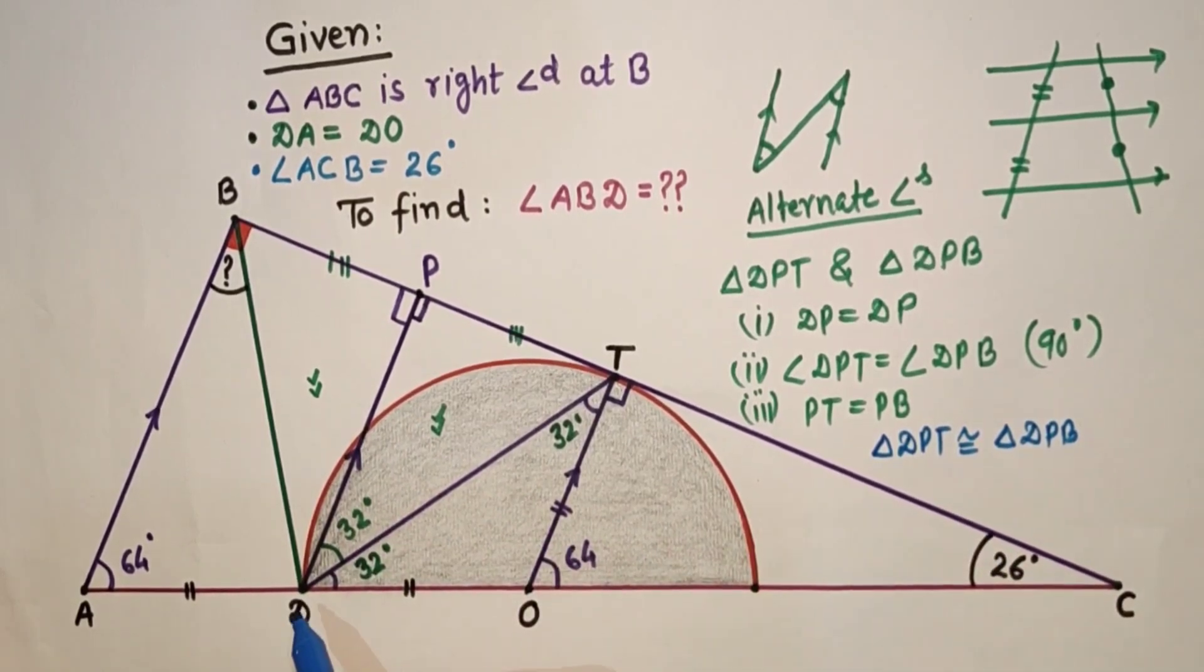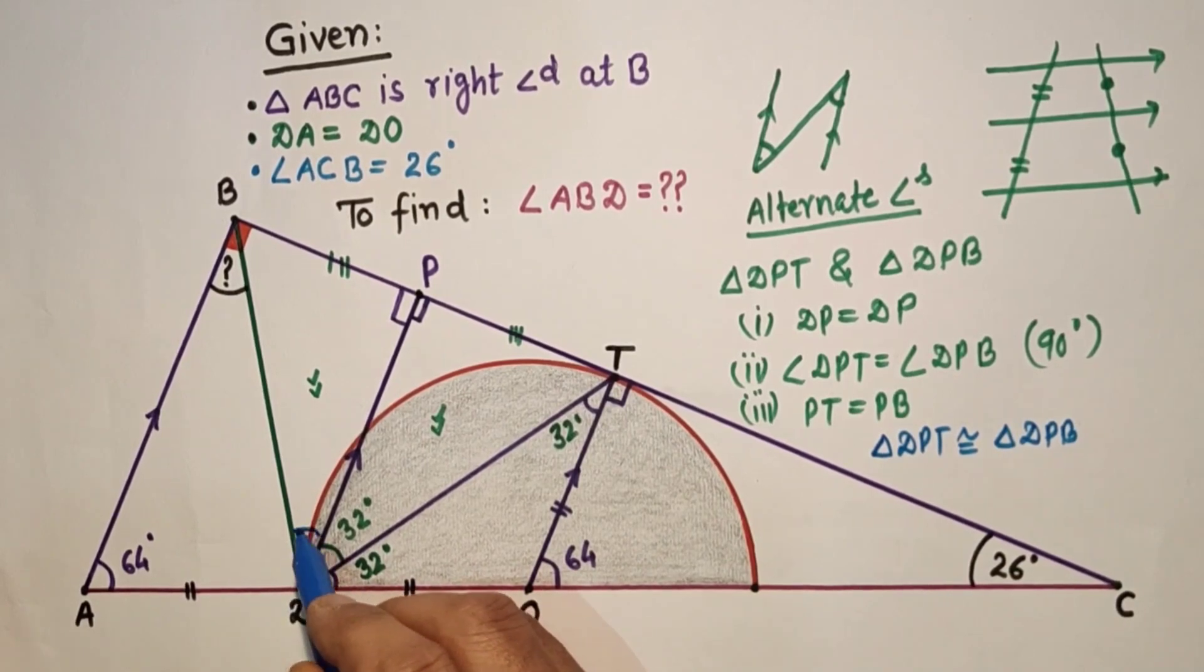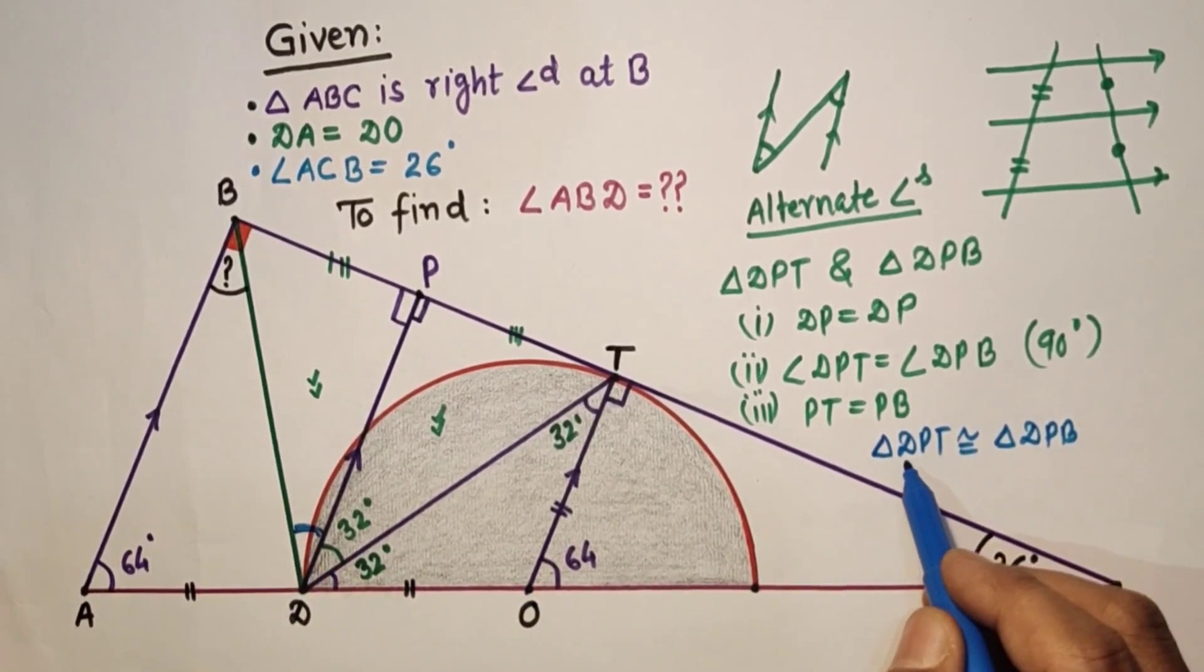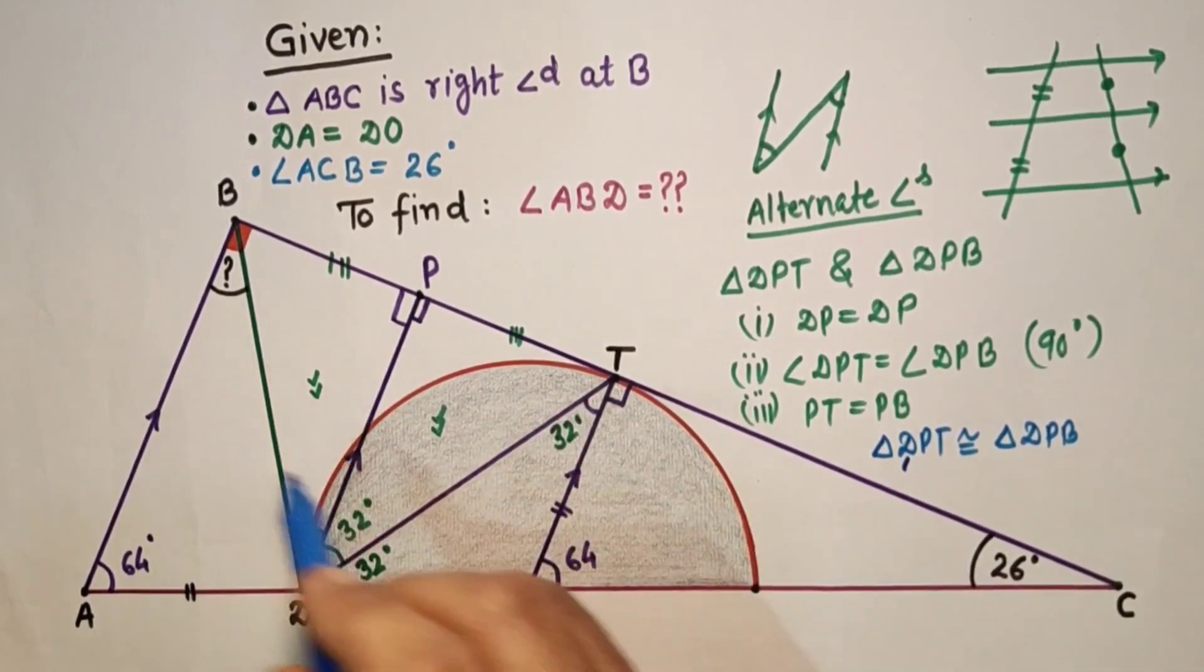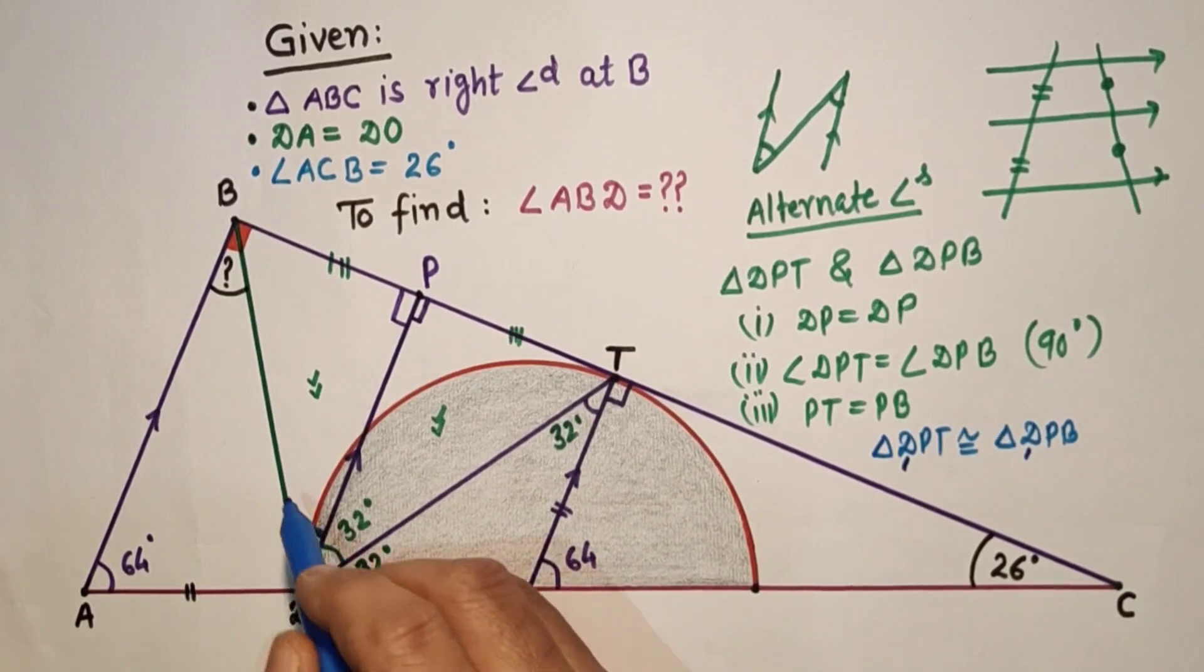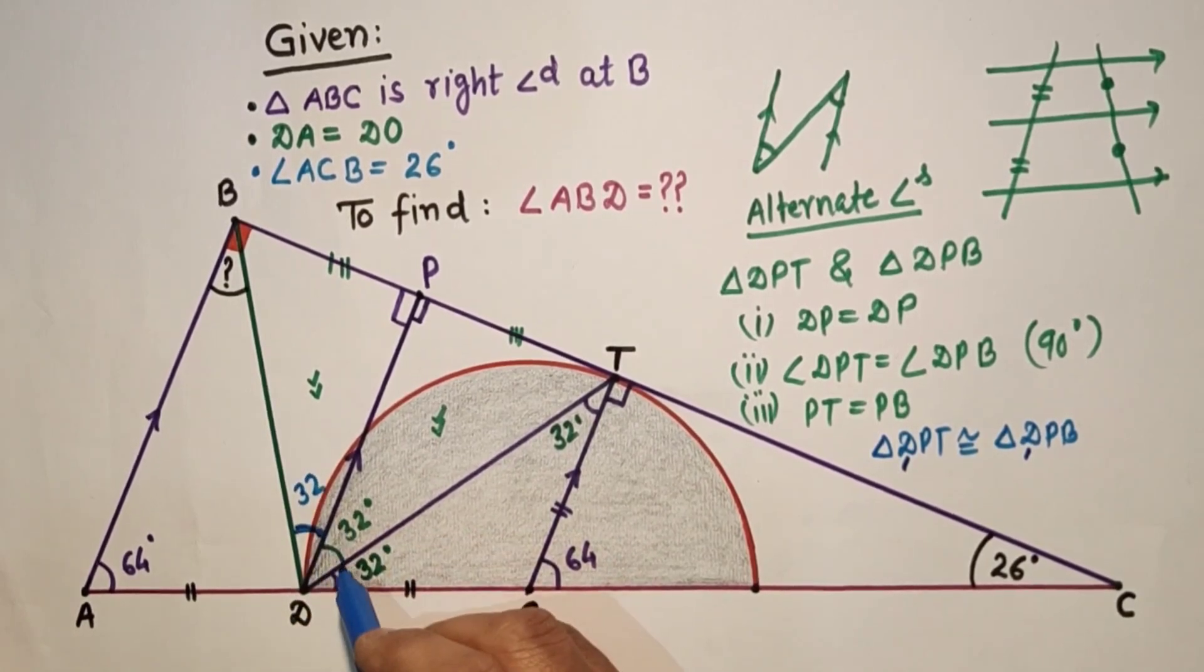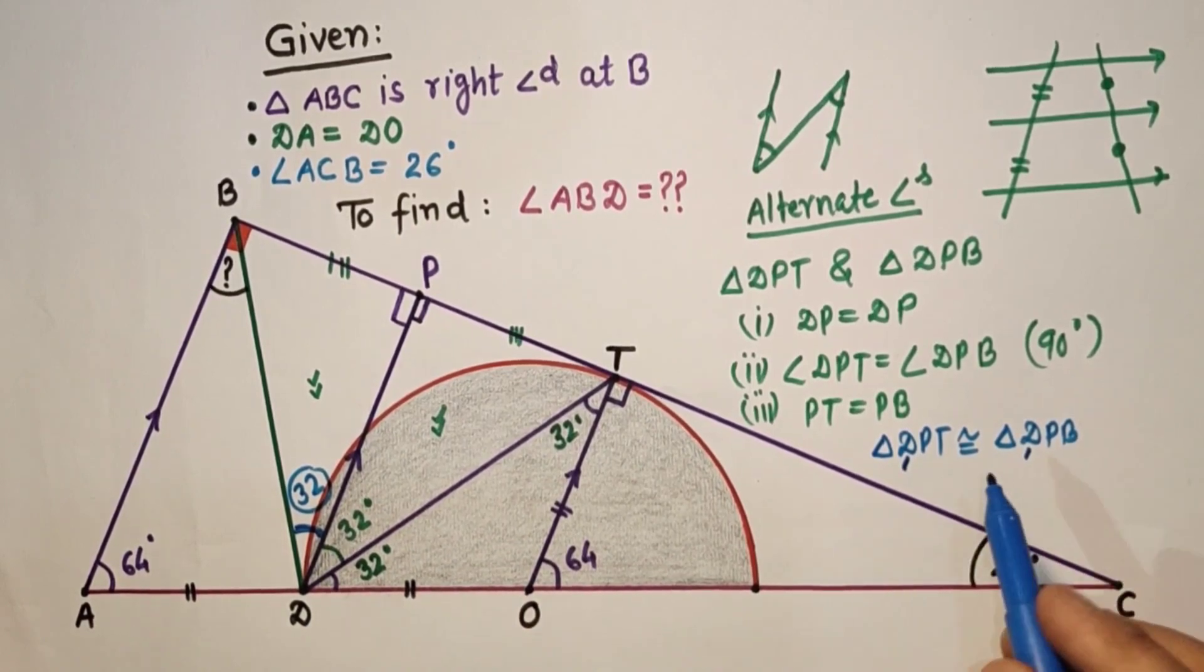It means this PDT, this angle, is equal to PDT is equal to PDB. So this is 32. This angle is equal to this angle. This is 32, because corresponding angles of congruent triangles are equal.